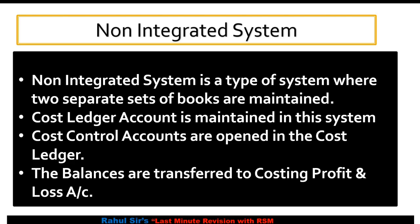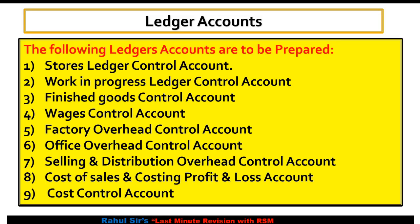Now I have the PPT format of what I explained. Non-integrated system is a type of system where two separate sets of books are maintained — useful for short notes or objective questions. Cost ledger account is maintained in this system. Cost control accounts are opened in the cost ledger, and balances are transferred to costing profit and loss account. The ledger accounts to be prepared include: stores ledger control account, WIP ledger control account, finished goods control account, wages control account, factory overheads control account, office overheads, selling and distribution, cost of sales, costing P&L, and cost control account.